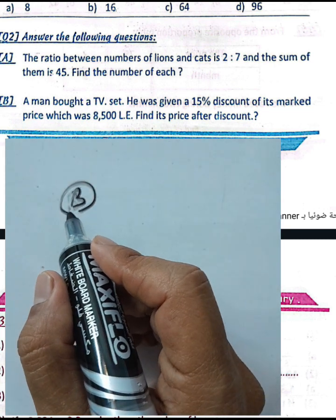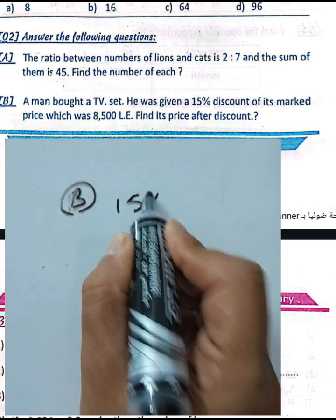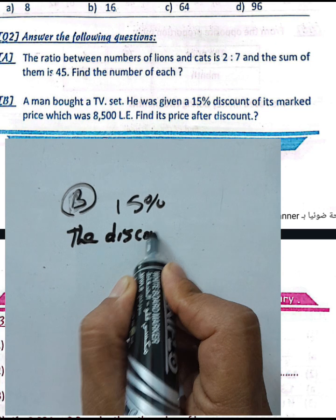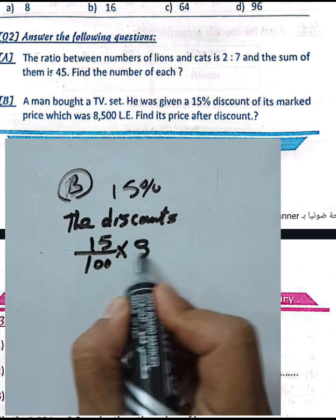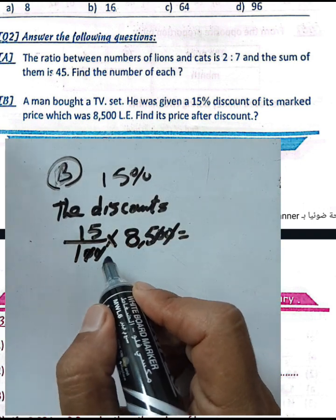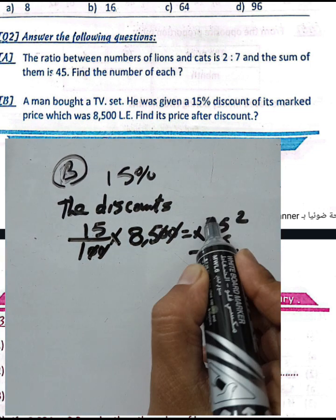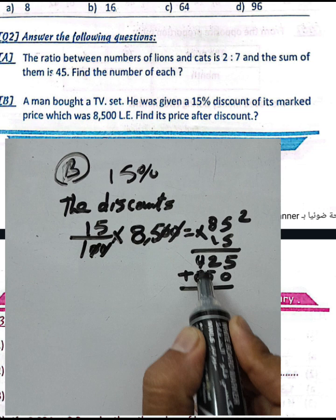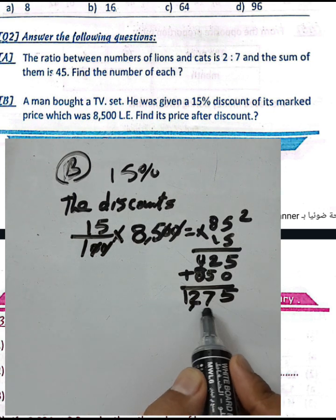A TV has a 15% discount. To find the price after discount, first calculate the discount: 15 over 100 times 8500. Cancel zeros, leaving 85 times 15, which equals 1275. The discount is 1275.